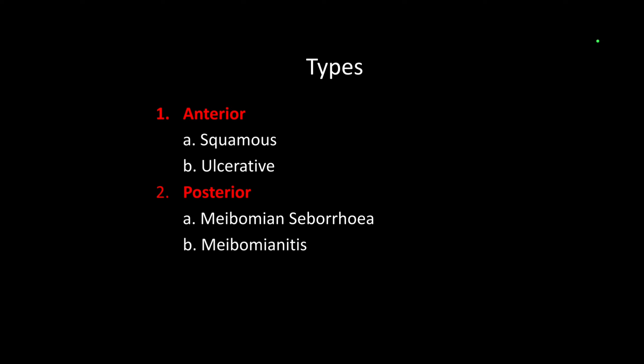What are the types? Broadly, we divide it into two types: anterior blepharitis and posterior blepharitis. Anterior blepharitis is further divided into squamous and ulcerative. Posterior blepharitis is basically related to the meibomian gland — inflammation of the meibomian gland or duct. It can also be presented in the form of seborrhea.